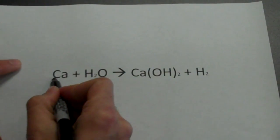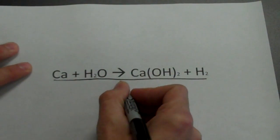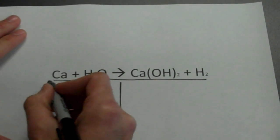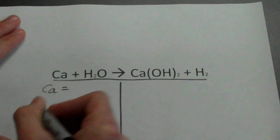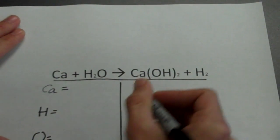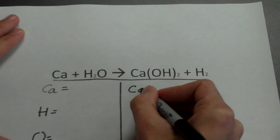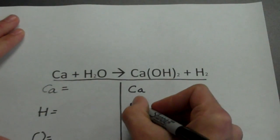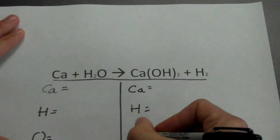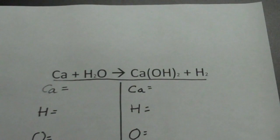We'll set it up to make it nice and neat. Looking over the equation, I have calcium, hydrogen, and oxygen on the reactant side, and over here on the product side I also have calcium, hydrogen, and oxygen. So far, we do have the same types of atoms — nothing unusual. The same types of atoms appear on both sides.